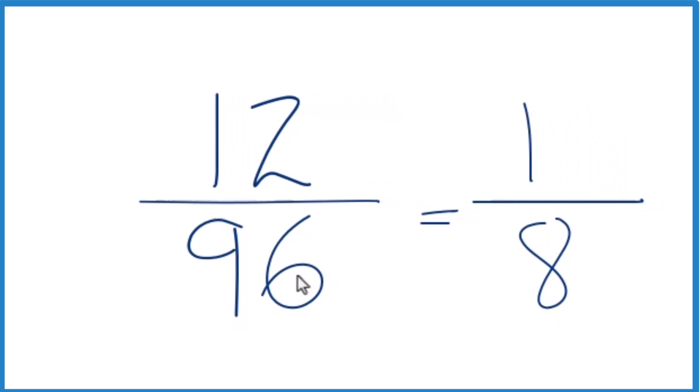So 12/96, when we simplify or reduce that, we get 1 eighth. We can't simplify this any further. And 1 divided by 8 or 12 divided by 96, you'll get the same decimal answer.